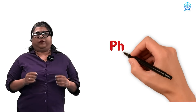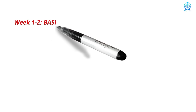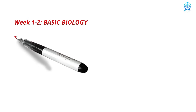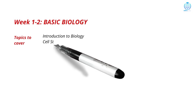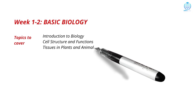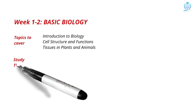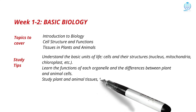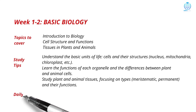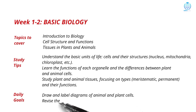For weeks 1 and 2, start at the foundation with basic biology. The topics include introduction to biology, cell structure and functions, and tissues in plants and animals. You have to understand the cell as the basic unit of life. Learn every structure — nucleus, mitochondria, chloroplast — and their exact functions. Study plant and animal tissues carefully and revise their types and roles. Draw diagrams neatly, label them correctly and repeat them until they look professional. Remember, half of biology is clear labelled diagrams and the other half is understanding.